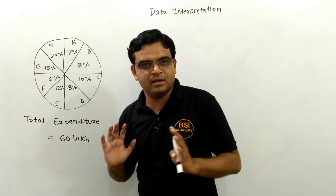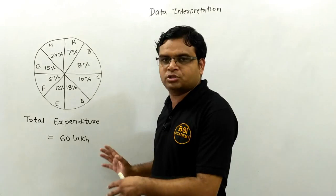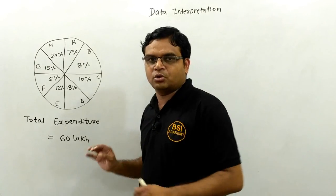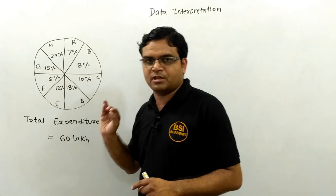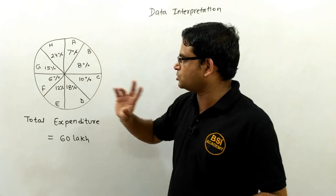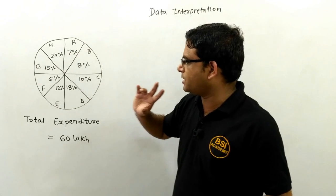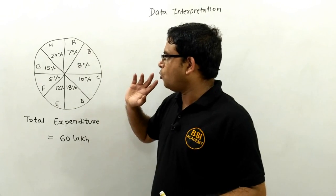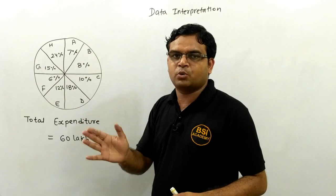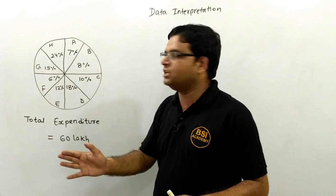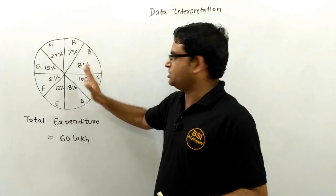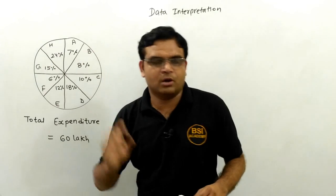Now I am framing some questions on the basis of this data. The first question is: what is the difference between the expenditure of G and C?